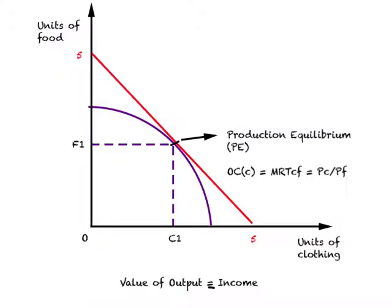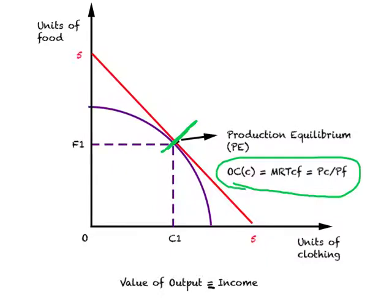Now let us work through showing general equilibrium for the economy, bringing producers, consumers, and financial information onto the same diagram. We start with an increasing cost PPC, where the point of tangency is the production equilibrium point. At production equilibrium, the marginal rate of transformation equals the price ratio, and we can determine how many units of clothing and food will be produced.